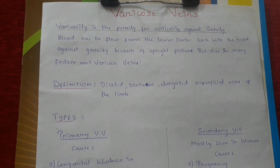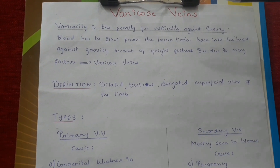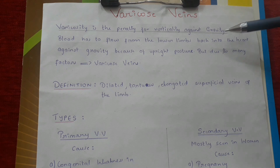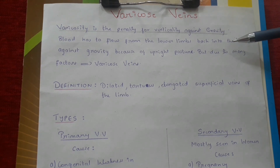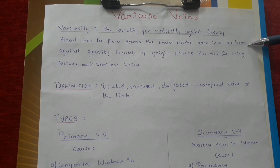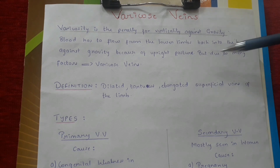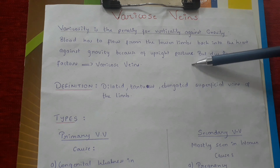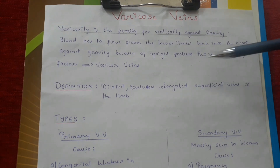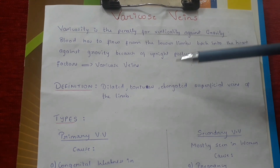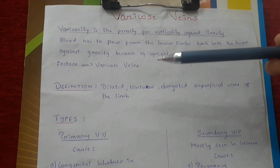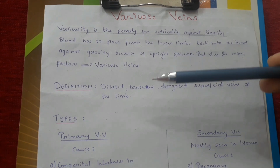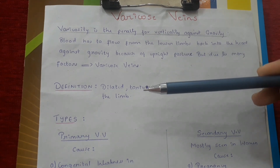Varicose veins. Varicosity is the penalty for verticality against gravity. It means that the blood has to flow from the lower limbs back into the heart against gravity because of the upright posture in human beings. But due to many risk factors, it results in a condition which is called varicose veins.